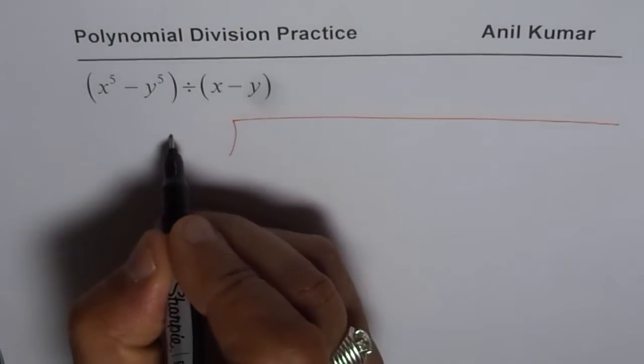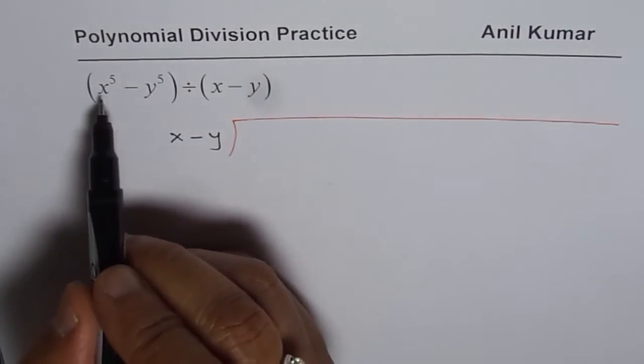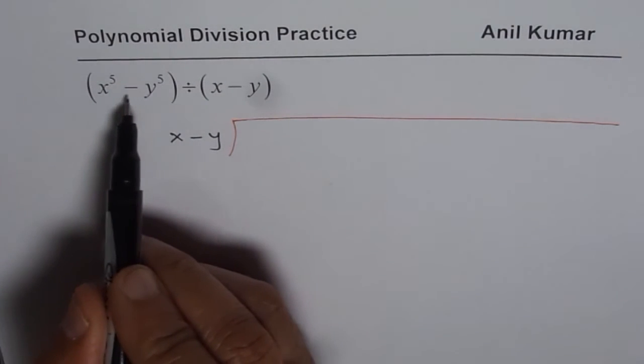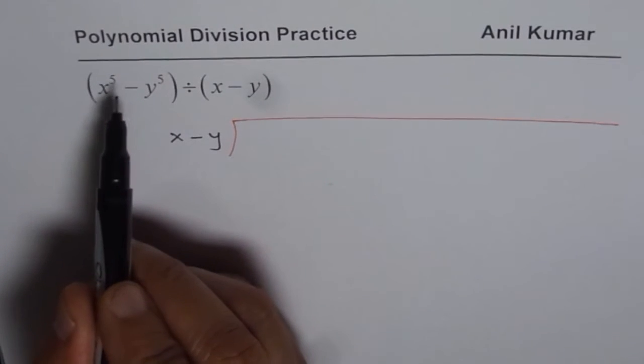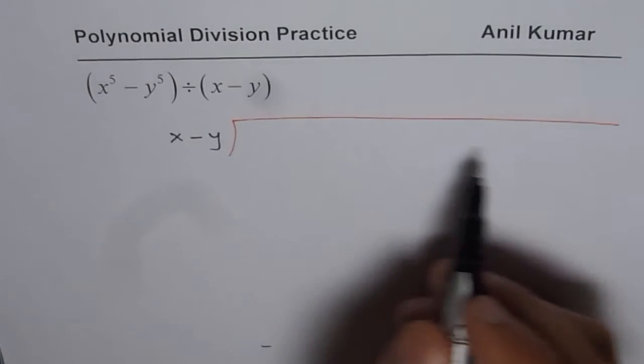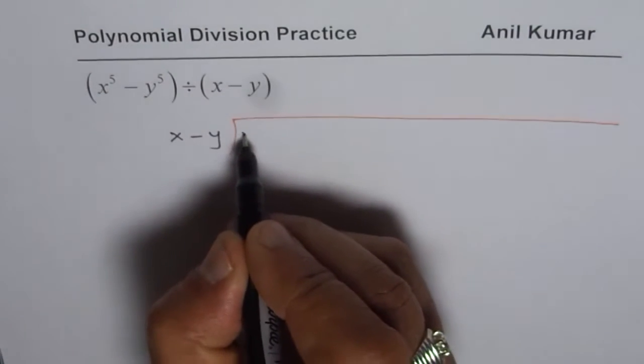We'll do long division. The divisor is x minus y, and the dividend is x to the power of 5 minus y to the power of 5. Clearly there are a few terms missing: x to the power of 4, x cube, x square, and x. So we need to introduce them with placeholders.